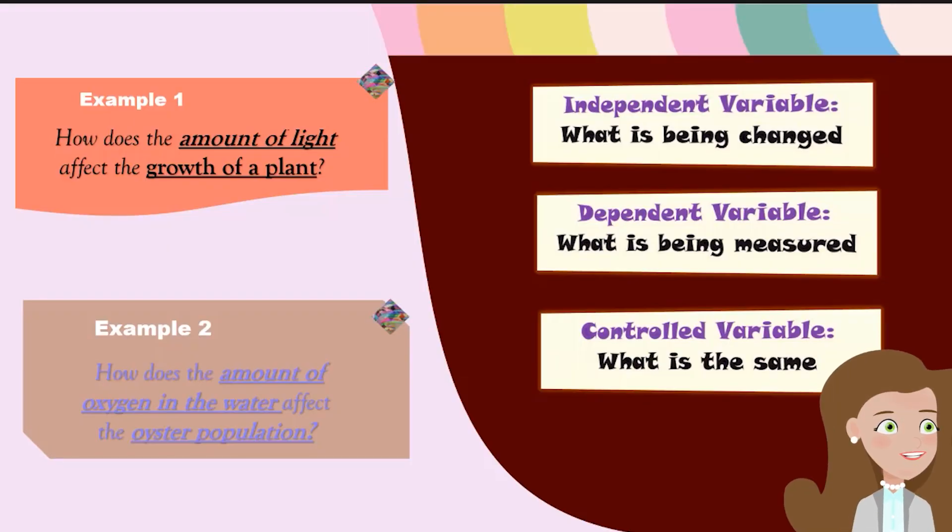The third type of variable is your controlled variable. Your control variable is being kept the same. We can use the control variable to measure our results and check the accuracy of the experiment. The controlled variable for this example could be the amount of water or the type of fertilizer that is being used.